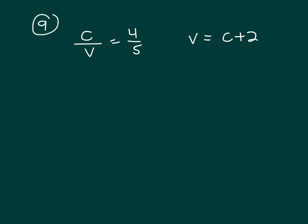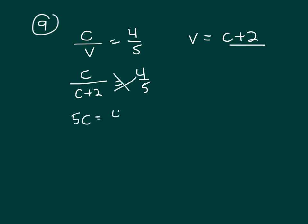We're trying to figure out V — how many viola players. So let's substitute this in for V. C over C plus 2 equals 4 fifths. Let's cross multiply. That gives me 5C equals 4C plus 8, and that's C equals 8. So viola would be 8 plus 2, which is 10.